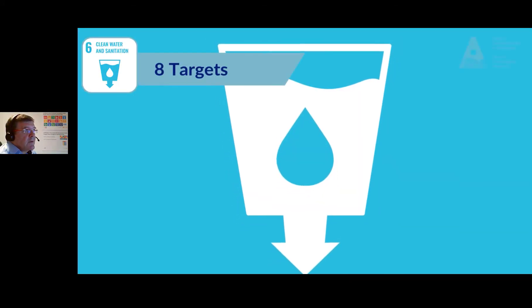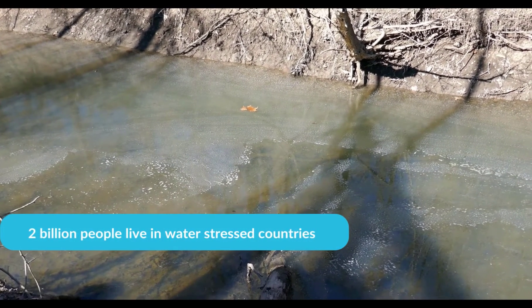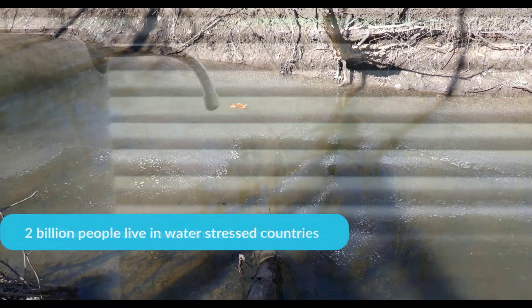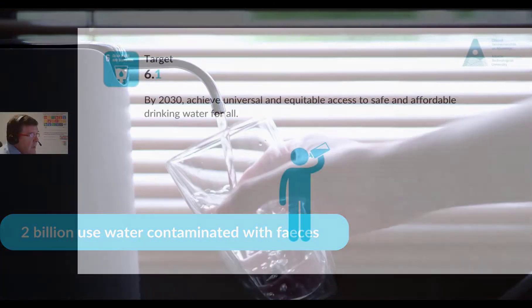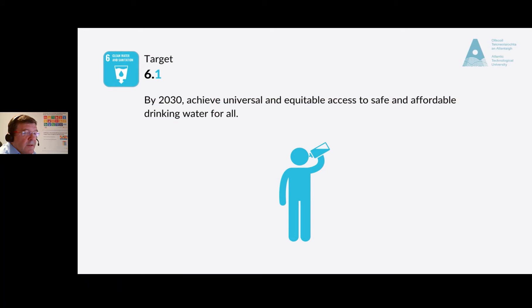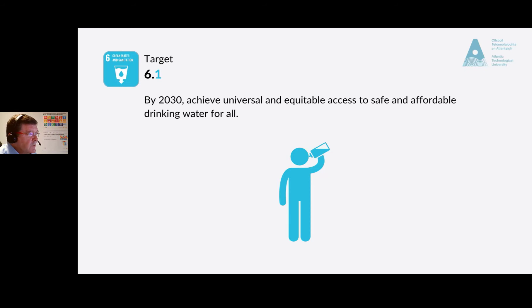In SDG 6, we have eight targets. Target 6.1: by 2030, achieve universal and equitable access to safe and affordable drinking water for all. Over 2 billion people live in water-stressed countries, and this will increase with climate change. Globally, at least 2 billion people use drinking water sources contaminated with feces. The indicator for this target is the proportion of population using safely managed drinking water services.